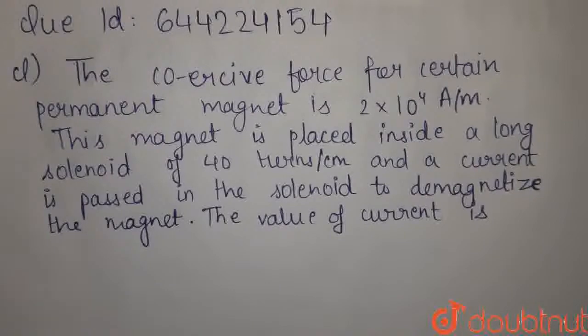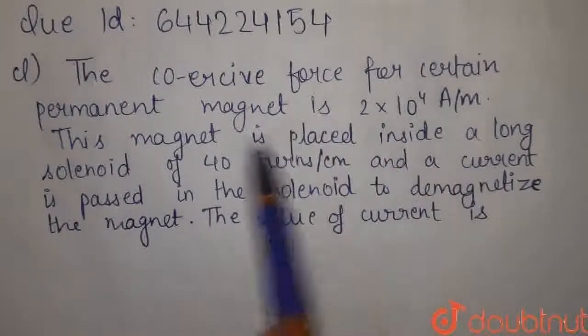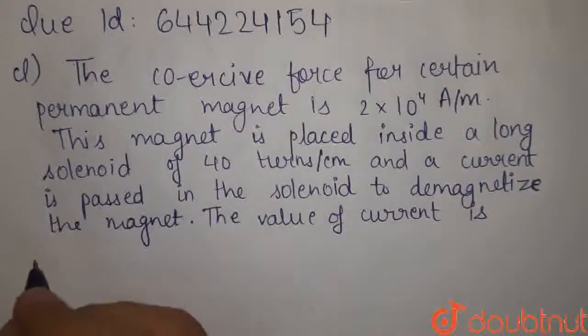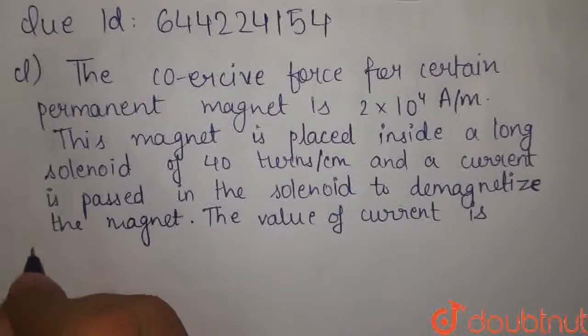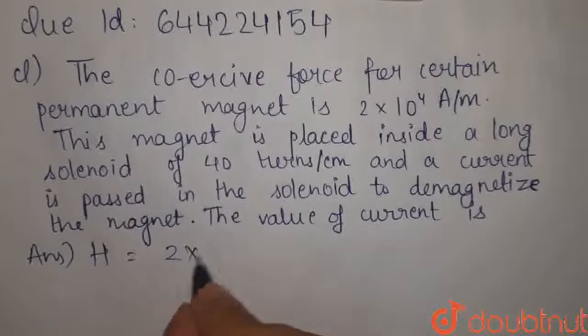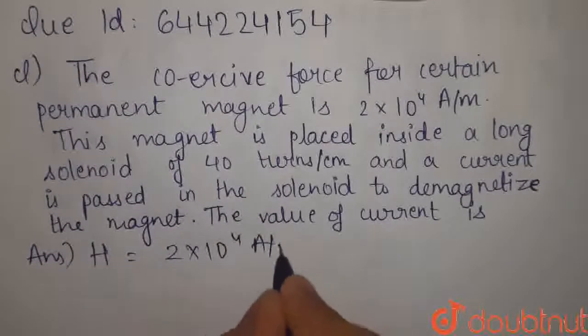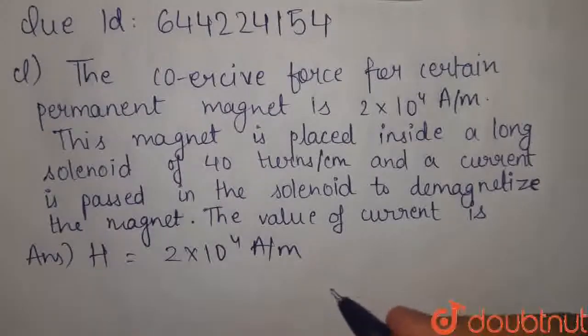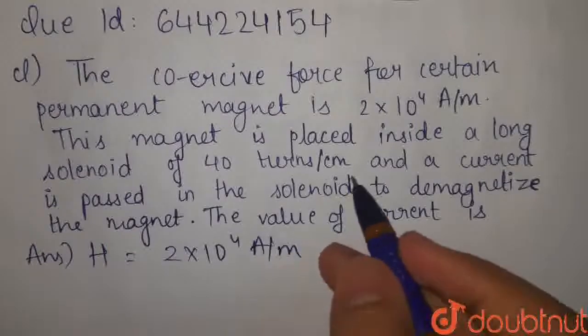हमें current का value पता करना है. Question में क्या दिया है? Coercive force of a certain permanent magnet. Coercive force मतलब उसका magnetic field strength, जिसको हम denote करते हैं H से. H दिया है हमारा 2 into 10 to the power 4 ampere per meter. Oscillations भी दिया है. Turns per centimeter.